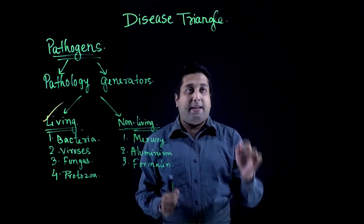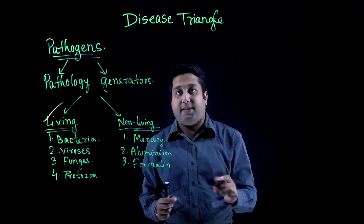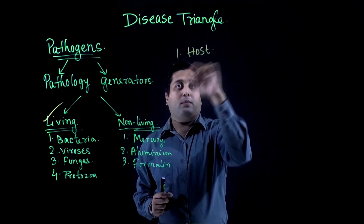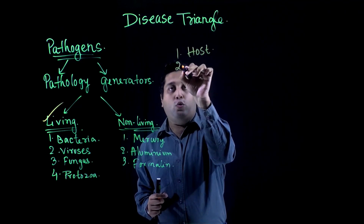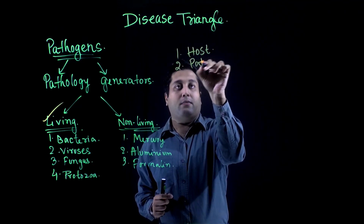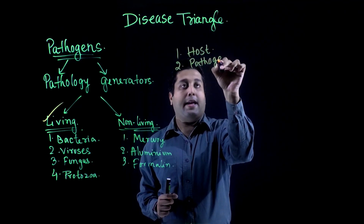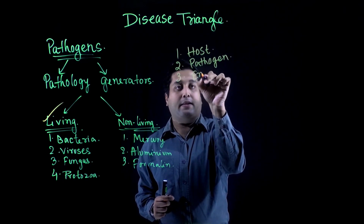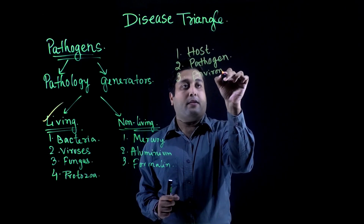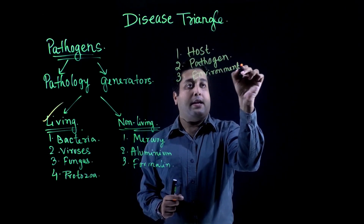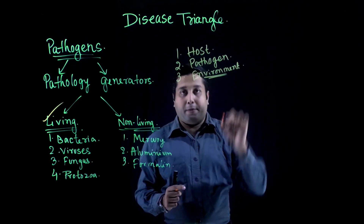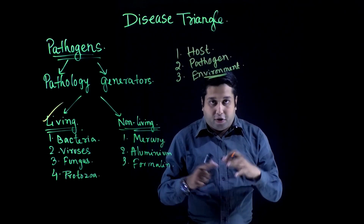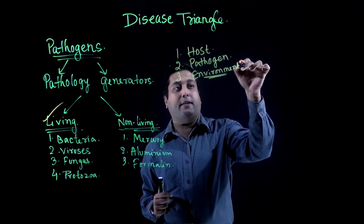According to the disease triangle, for a disease to take place, three components must be considered: number one is the host, number two is the pathogen, and number three is the environment. This environment represents the environment inside the host's body and the surrounding environment the host lives in.